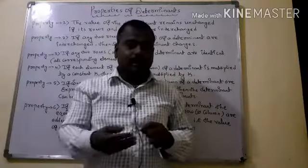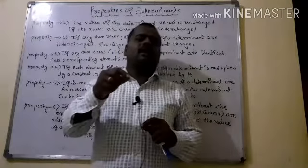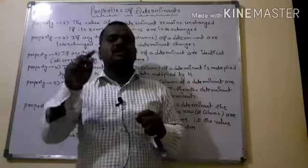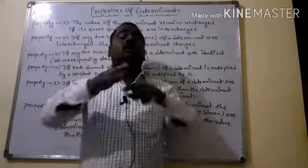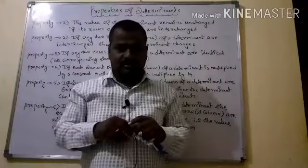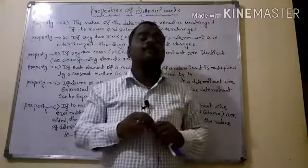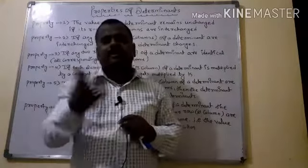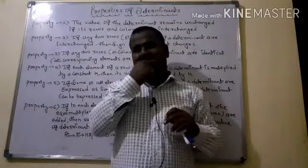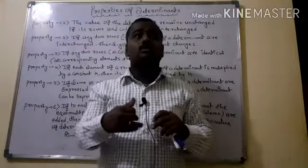The fourth property: if any element of a row or column is multiplied by a scalar constant, the result is that the whole determinant gets multiplied by that scalar. The fifth property involves the sum of two corresponding elements — we are going to express these things to arrive at a very wonderful result.